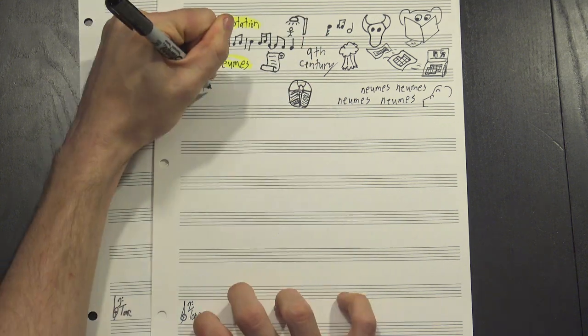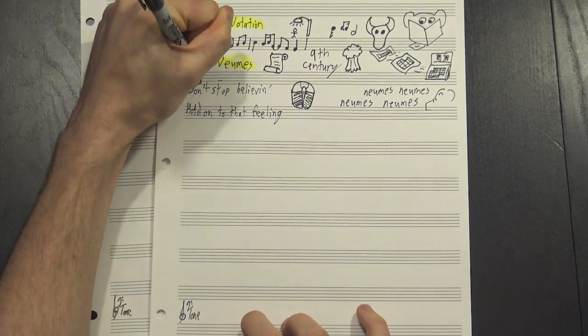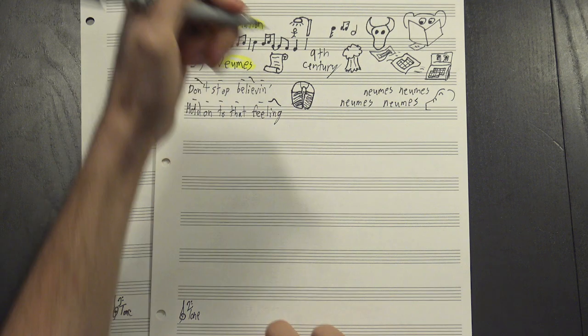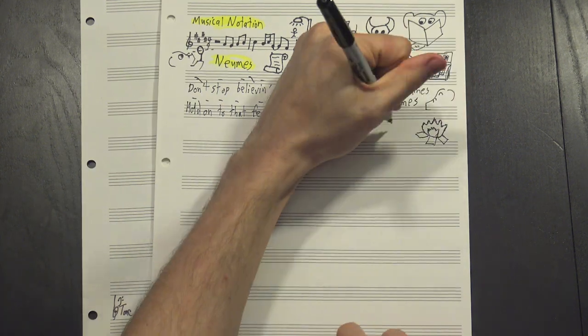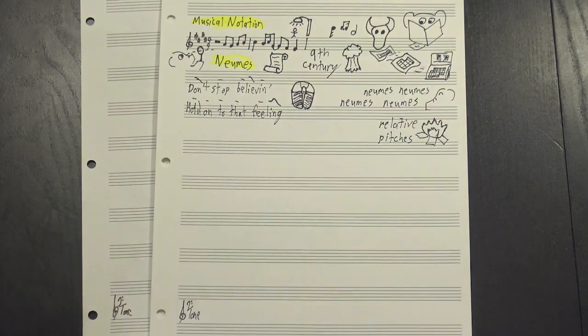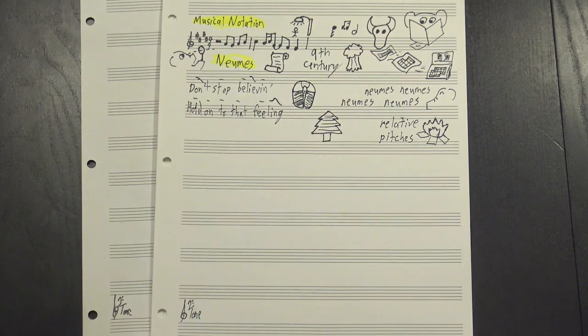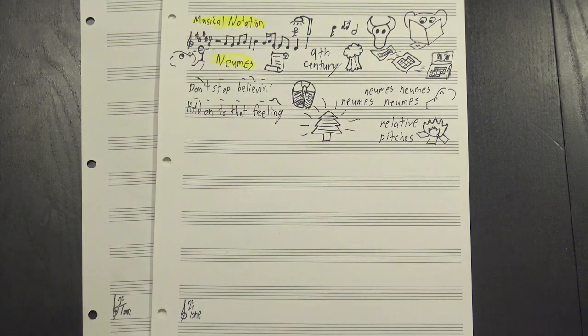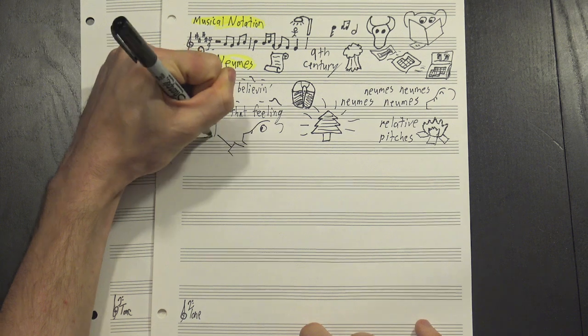The first neumes worked something like this. You'd write out your lyrics, then you'd put a mark over each syllable that represents how the melody moves there. It's a fairly crude approach, they don't even tell you about the relative pitches of the syllables, just how each one was ornamented. In order to understand why this was good enough, though, there's a couple things you need to know about the music of the time.